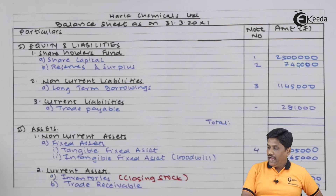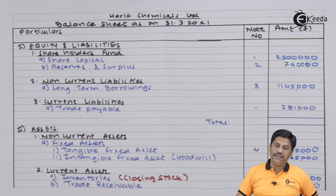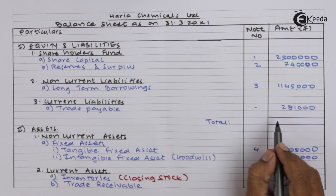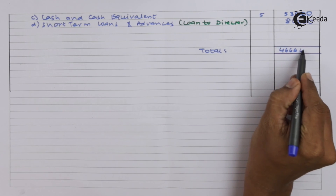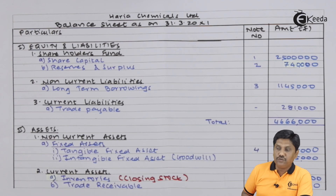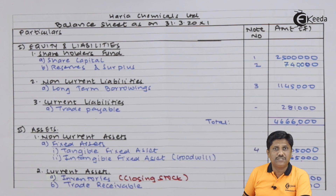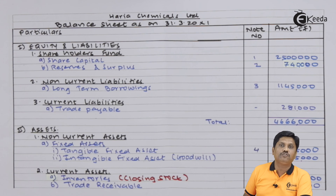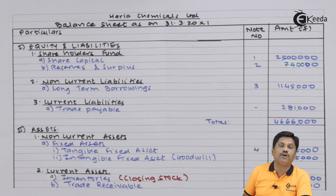The net profit for the year will be added to the P&L account balance standing in reserves and surplus. I will place this in the balance sheet. I hope this simple question you must have understood. If you have any doubts, please put them in our comment box — we'll try to resolve your queries at the earliest. Thank you for watching the video, students. God bless you.